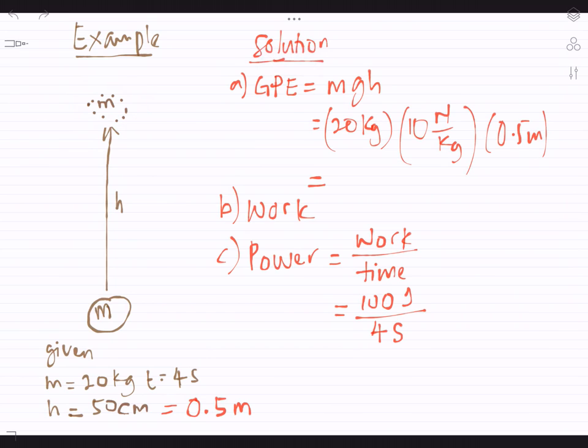And you are given some other information here. The mass for the object is 20 kg, and the time taken to raise it is 4 seconds. And the height is 50 cm. And then the question here: what is the gravitational potential energy when it has been lifted?